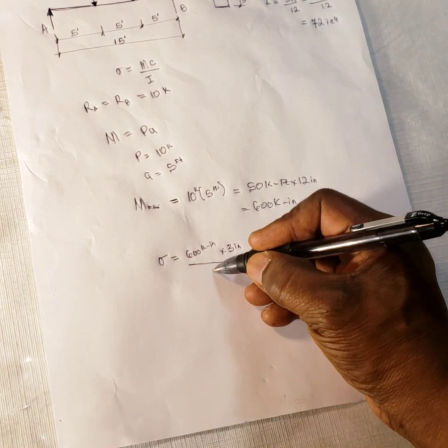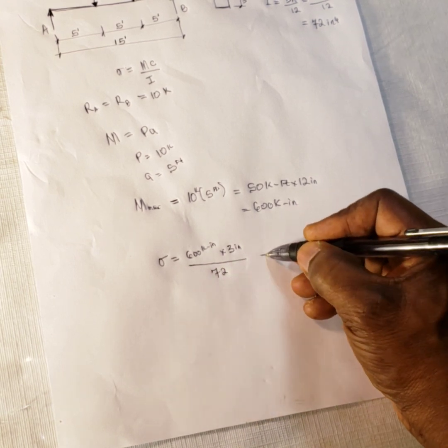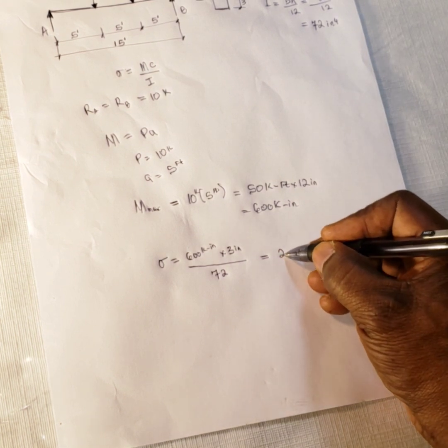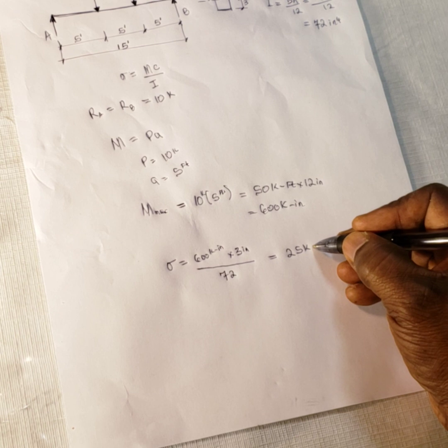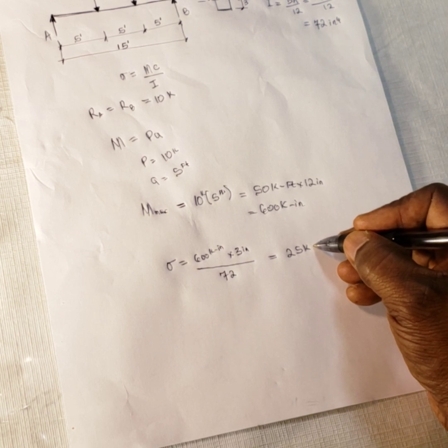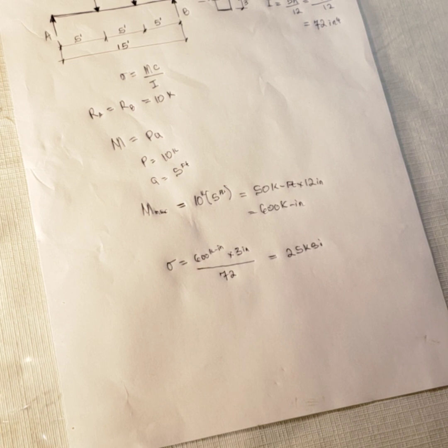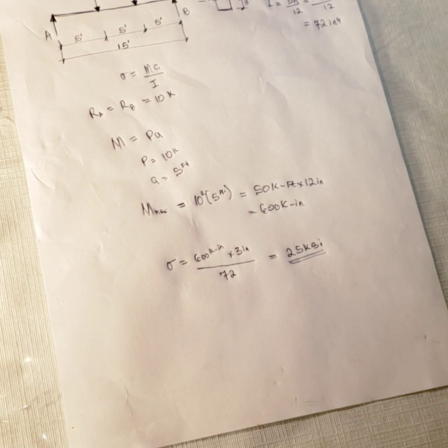And then you divide that by the moment of inertia, which is 72. When you do the calculation, you realize you have 25 kip ksi. That's 25 kip per square inch. And that's your final answer. So this is very straightforward.